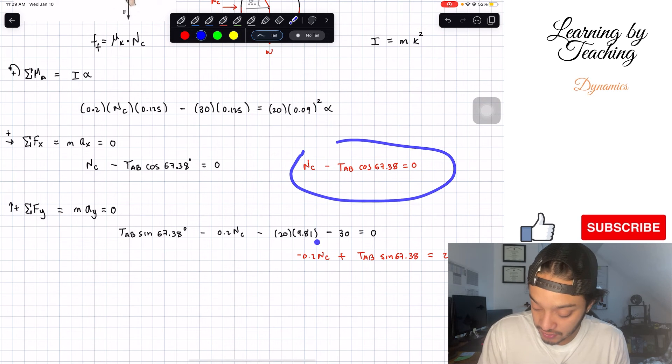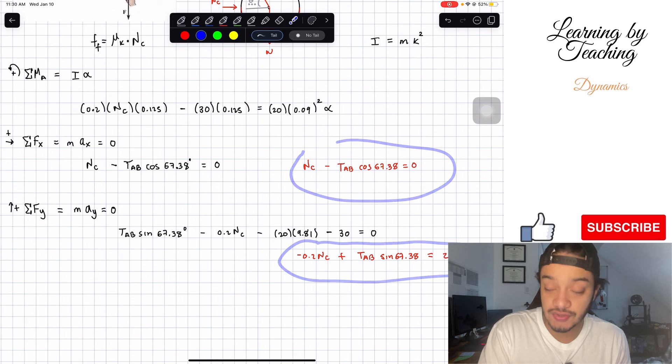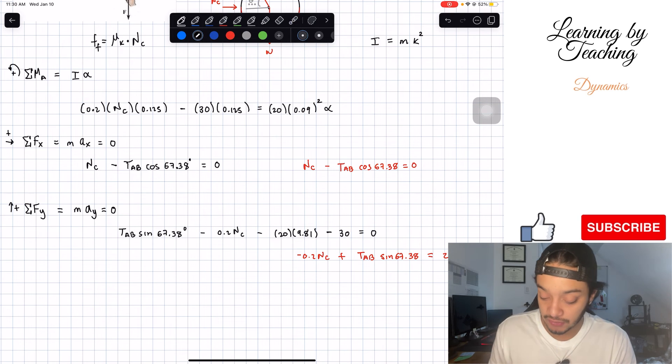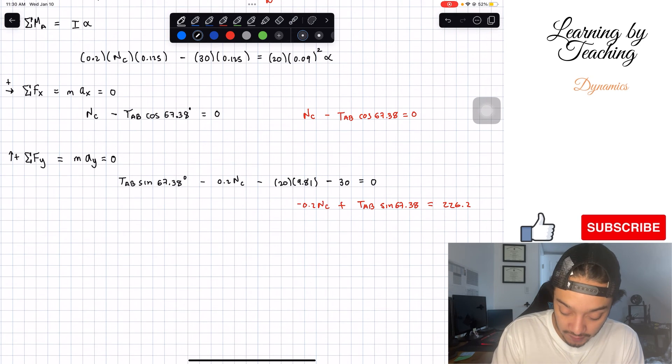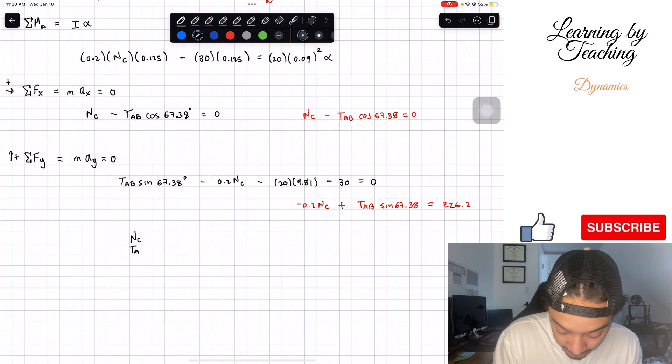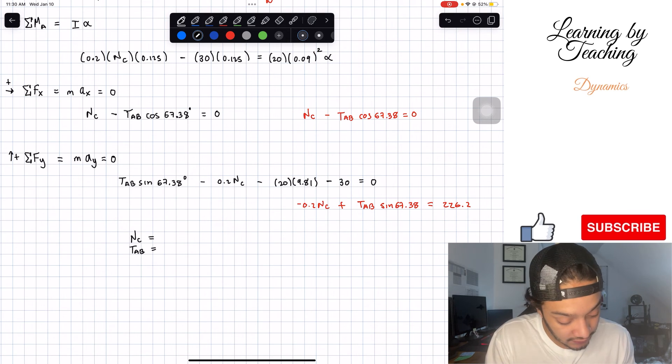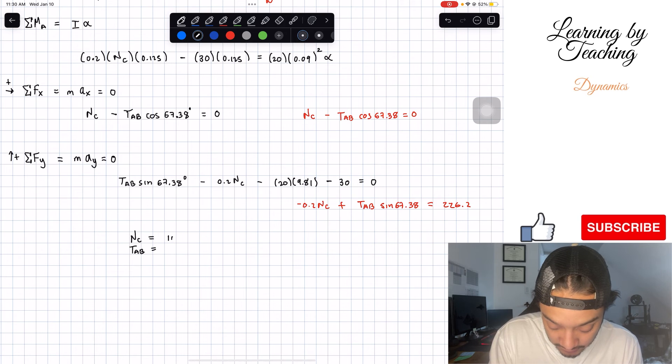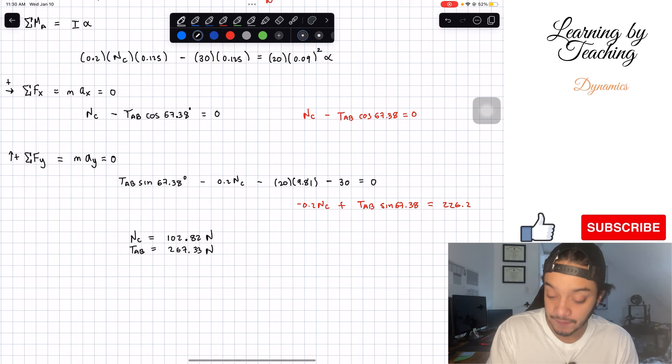I'm going to solve these two equations using matrices. You guys can use whichever method you prefer. So I'm going to plug them into my calculator. The normal at C will give me a total of 102.82 newtons, and my tension AB is going to be equal to 267.33 newtons.